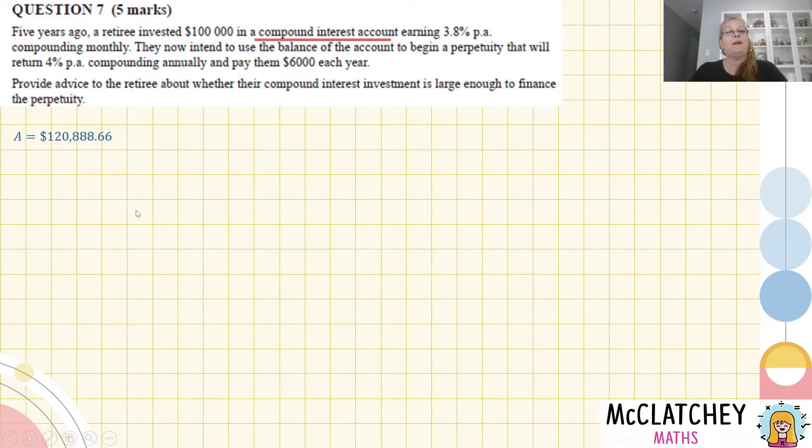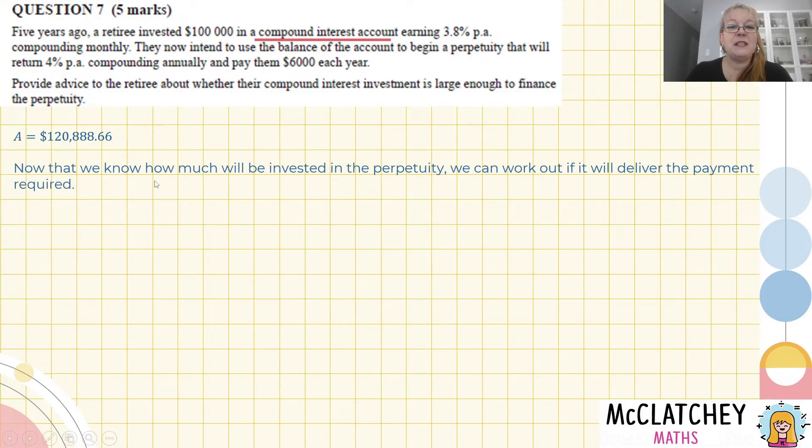We're almost halfway there. Now, we know our formula. This is what we're going to be investing into the perpetuity. We can work out if it's going to deliver this payment of $6,000. So we've got this formula here, M equals A times I. And we're told that this perpetuity is going to have an interest rate of 4% compounded annually. So I is just simply going to be 0.04. So if we take this amount here and multiply that by 0.04, we're going to work out exactly what kind of payment this perpetuity is going to deliver.